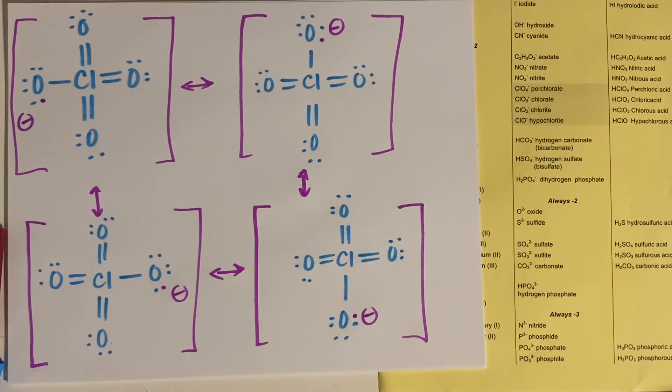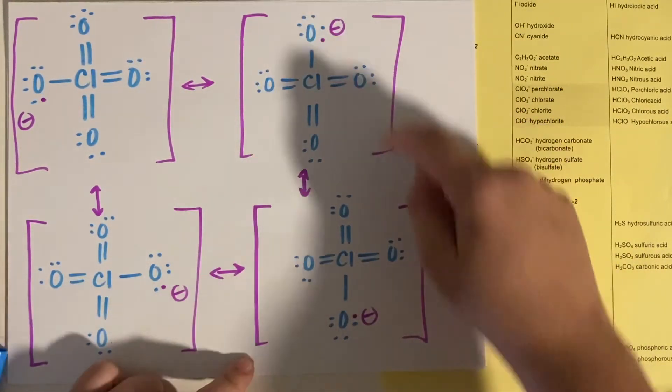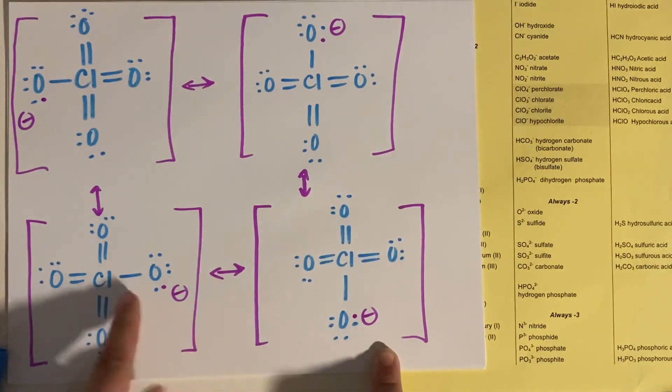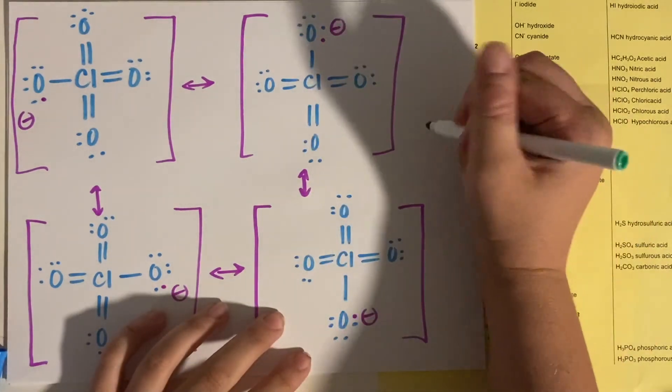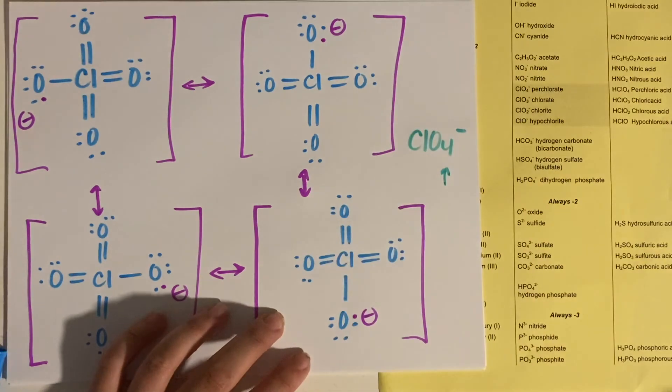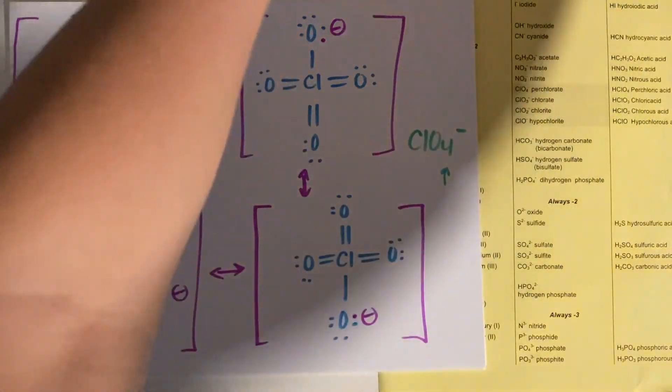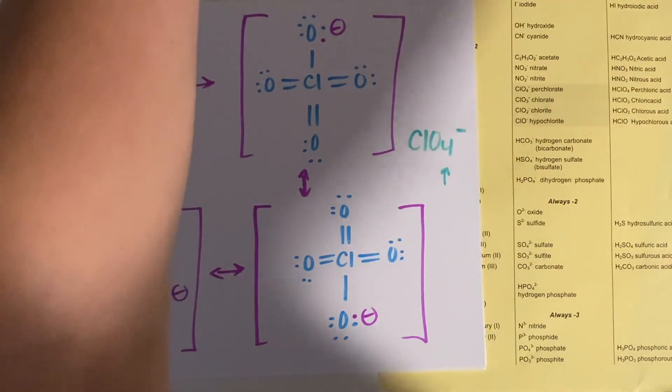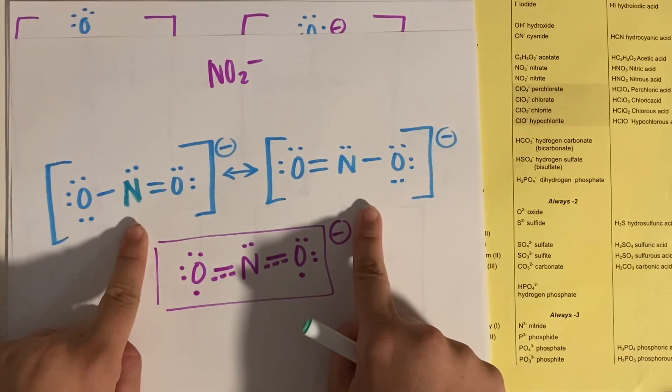Okay, so hopefully this makes sense to us. You could have the oxygen over here having that negative charge, the oxygen up here having that negative charge, down at the bottom, or off to the right. So in this case, ClO4 minus, there's four oxygens, there's four resonance structures. For NO2, two oxygens, two resonance structures.